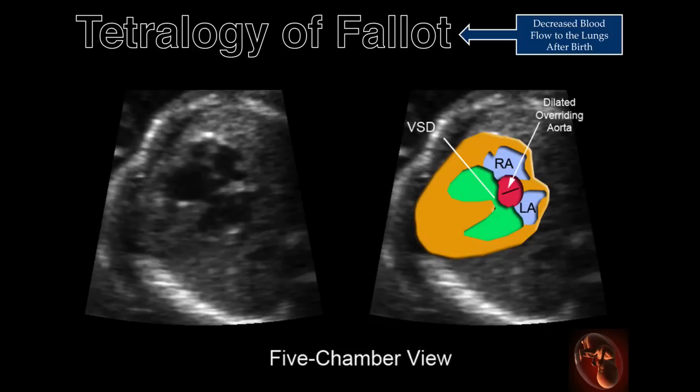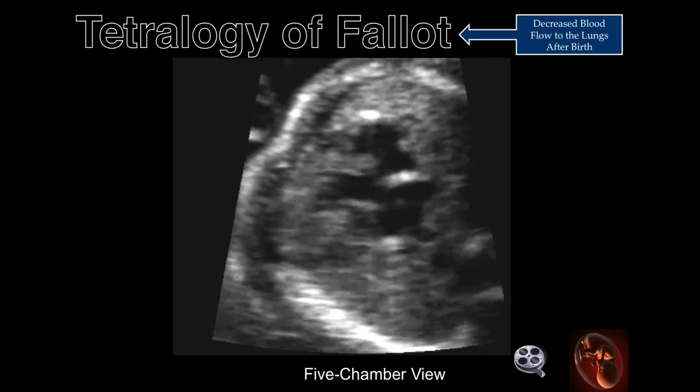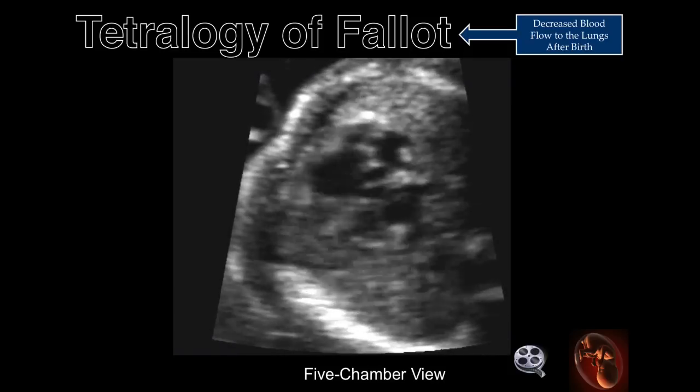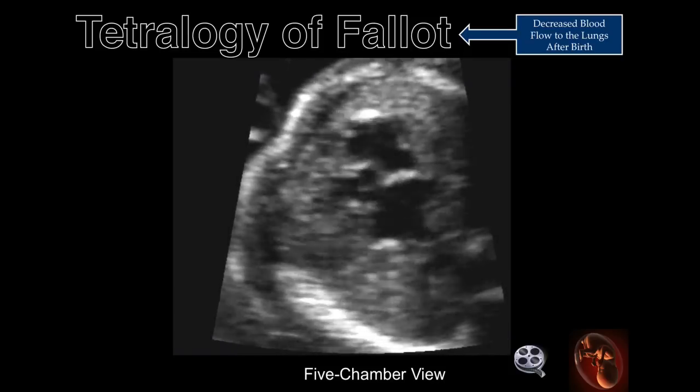This is the five-chamber view obtained in a transverse plane just cephalad to the four-chamber view. Notice that the dilated aorta overrides the ventricular septal defect. In the majority of fetuses with Tetralogy of Fallot, one of the first clues that this defect is present is the detection of an enlarged aorta. This is a spinning loop demonstrating the dilated aorta overriding the interventricular septum where the ventricular septal defect is located.